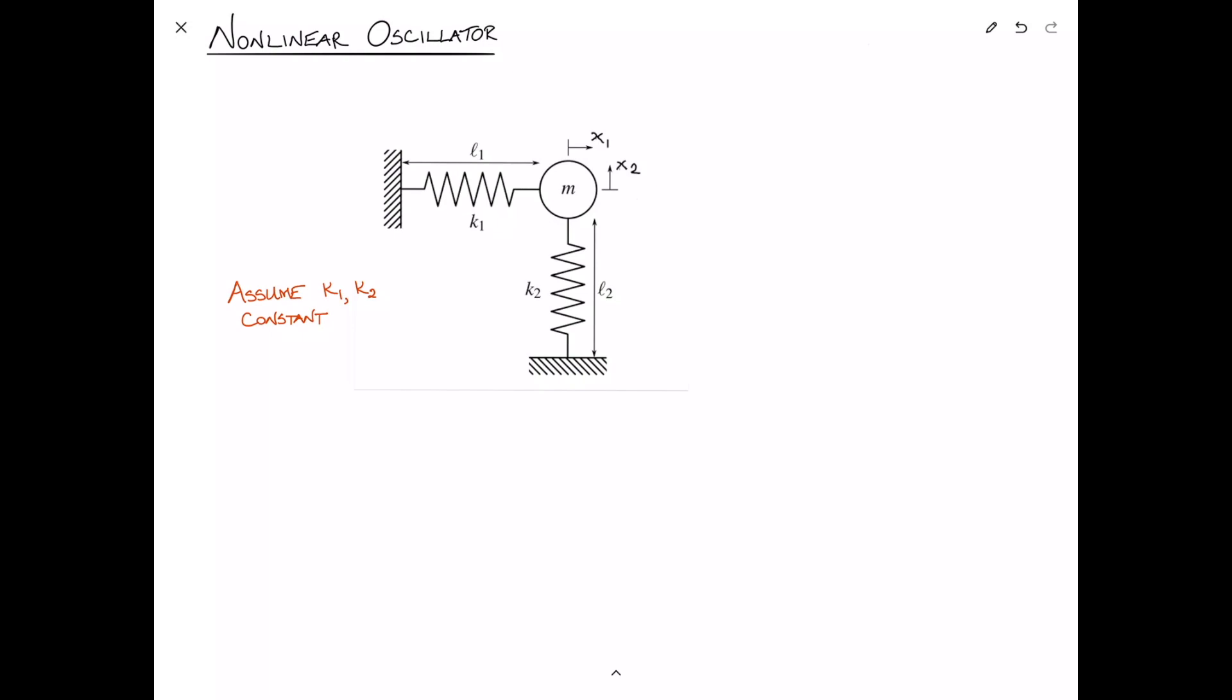I'll start out by drawing the unit vectors in the x1 and x2 direction. I'll call that e1 hat and e2 hat. Those are just unit vectors. Now consider some point here that we'll just call p, and p is equal to x1, x2.